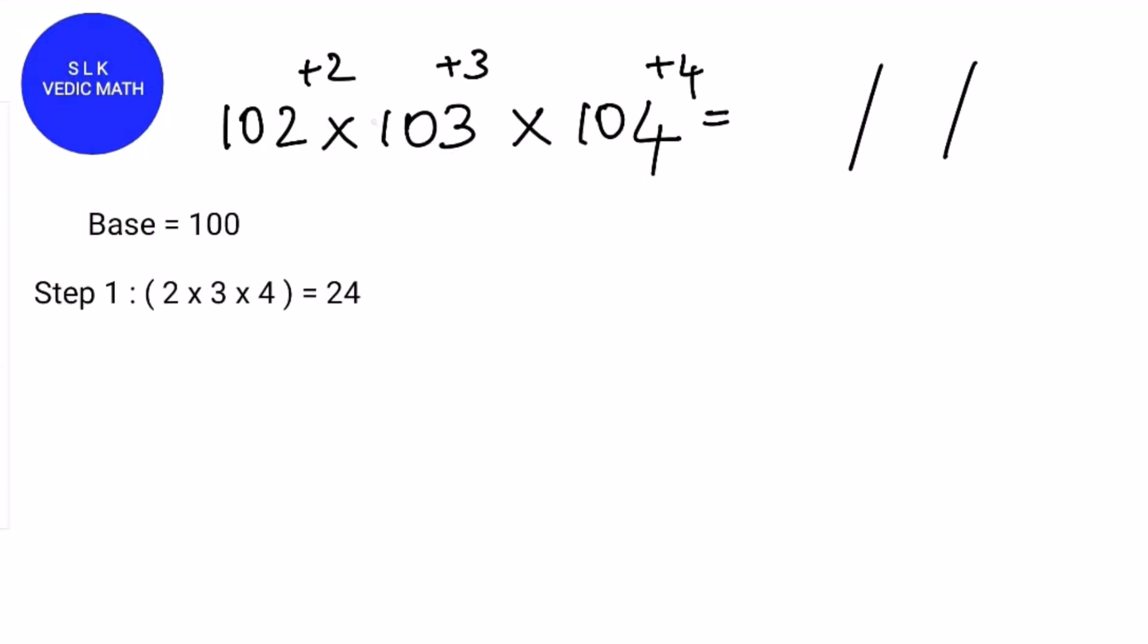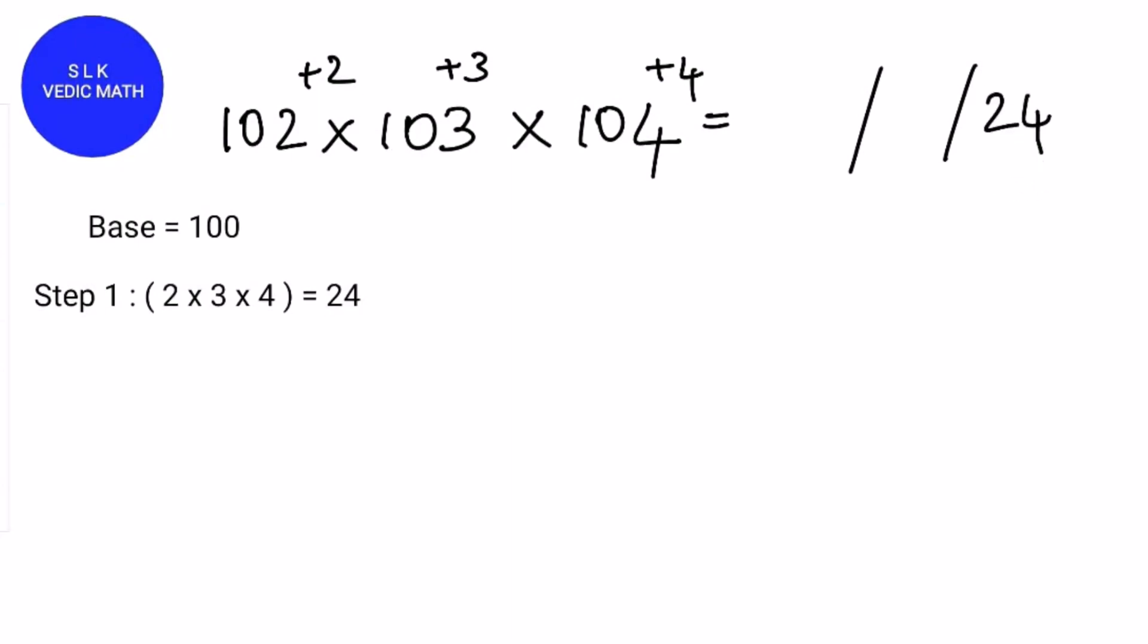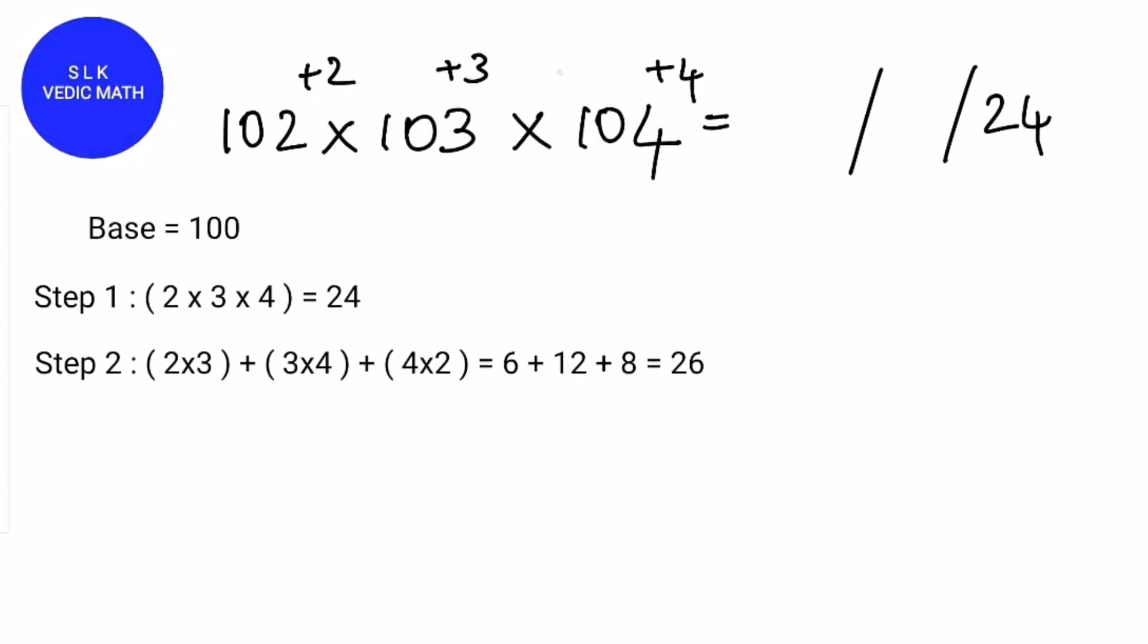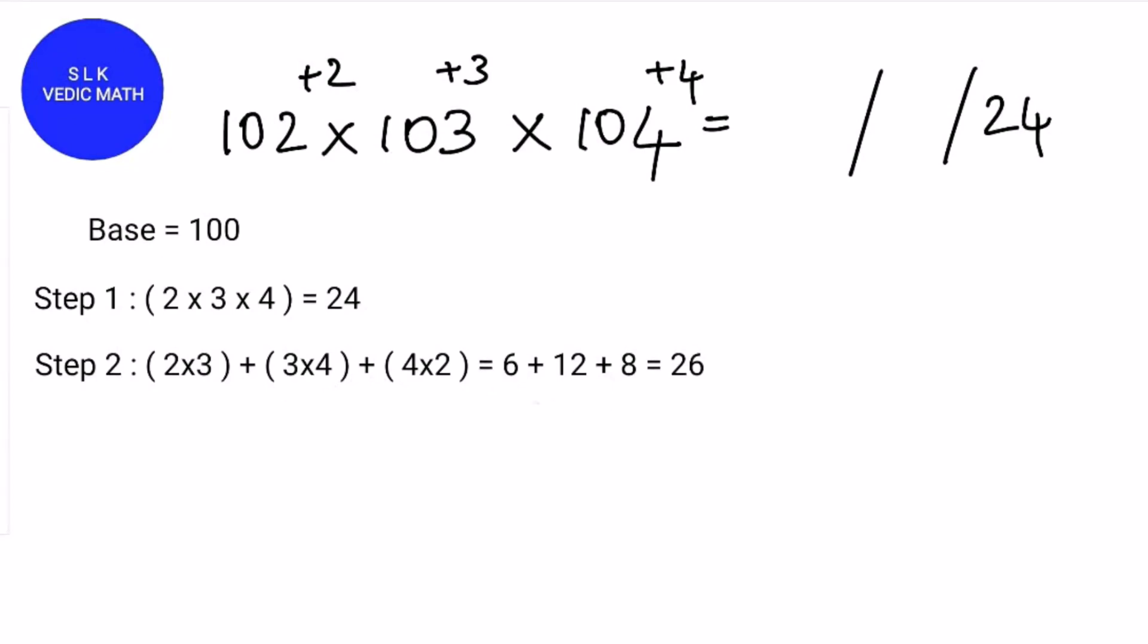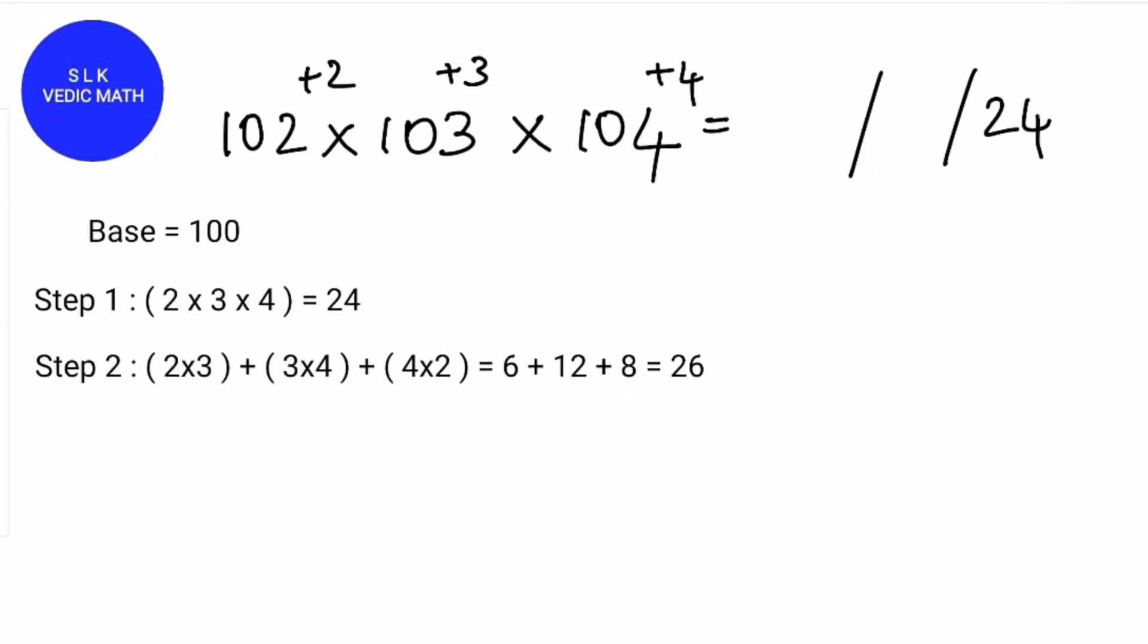First multiply the differences. So 2 × 3 × 4 which is 24. Write 24 in the last part. Next multiply 2 × 3 plus 3 × 4 plus 4 × 2. 2 × 3 is 6 and 3 × 4 is 12 and 4 × 2 is 8. 6 + 12 + 8 is 26. So write 26 in the middle part.